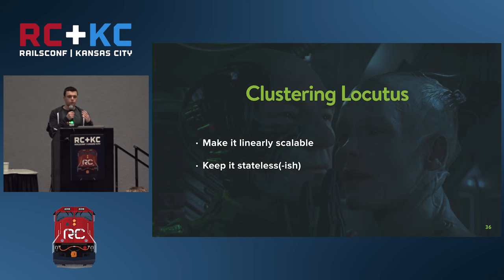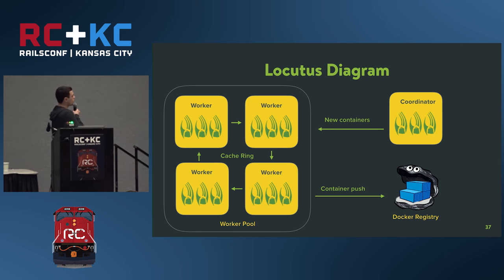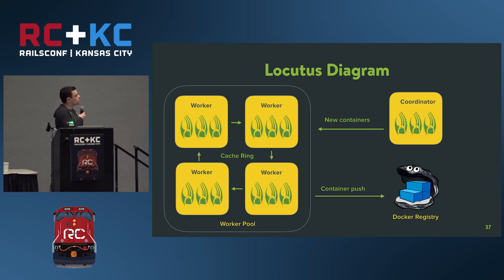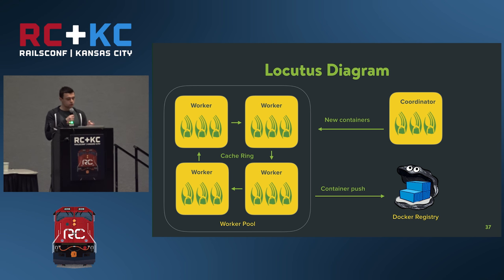When we outgrew our Locutus instance, we rebuilt it to be scalable and as stateless as possible. The new version had a coordinator instance that received webhooks and allocated work to a pool of workers — each repo was hashed to a particular worker so the same worker always received the same work. The system is stateless-ish: there's a cache on each machine and you can lose it and still build containers, but rebuilding the cache could take up to 20 minutes.